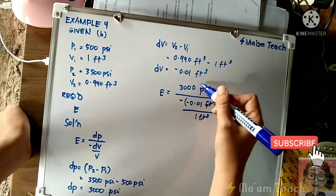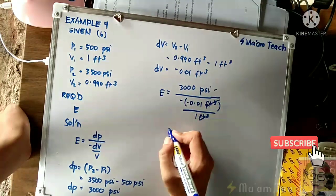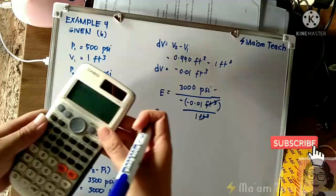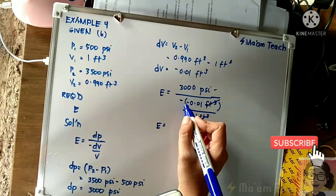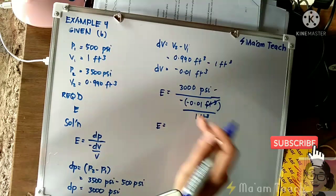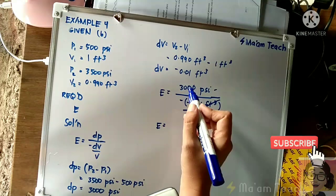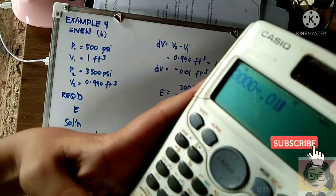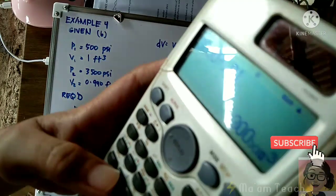Using your calculator, 3,000 - take notice this will become positive already because negative times negative is positive. So this will be positive 0.01. So we will divide: 3,000 divided by 0.01.